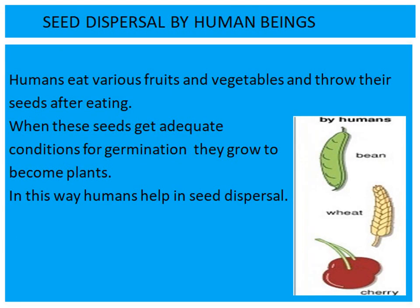Seeds dispersed by human beings. Humans eat various fruits and vegetables and throw their seeds after eating. When these seeds get adequate conditions for germination, they grow to become plants. In this way, humans help in seed dispersal.